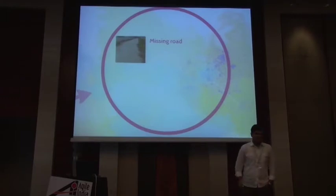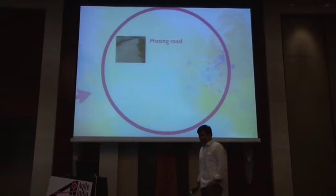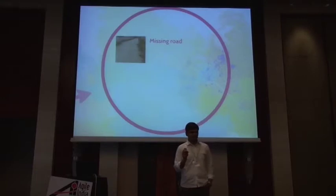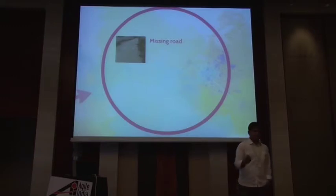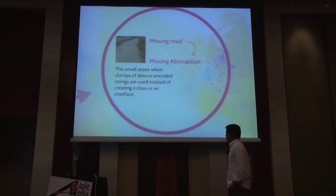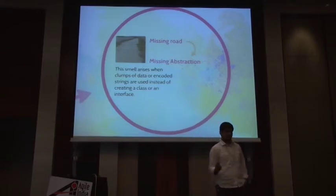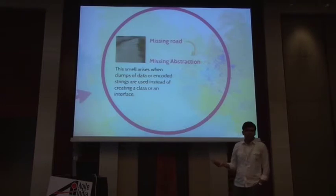Now let's connect the dots. I've shown you this missing road. If we talk about the transport domain, road is a basic abstraction. And if the road is missing, then the abstraction is missing. In the same way, if we use clumps of data or encoded strings instead of having a proper abstraction, then the abstraction is missing. That's basically the missing abstraction smell.